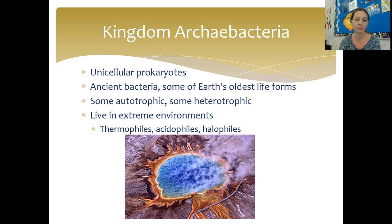Starting with Archaebacteria — 'archaic' means ancient, so these are our super ancient bacteria. These are unicellular, prokaryotic organisms. Remember, our only prokaryotes are bacteria; everything else is eukaryotic. Prokaryotic means they don't have a nucleus or other membrane-bound organelles. These are some of Earth's oldest life forms. Some are autotrophic, some are heterotrophic. The key characteristic of archaebacteria is that they live in extreme environments: thermophiles in very hot environments, acidophiles in very acidic environments, and halophiles in very salty environments.